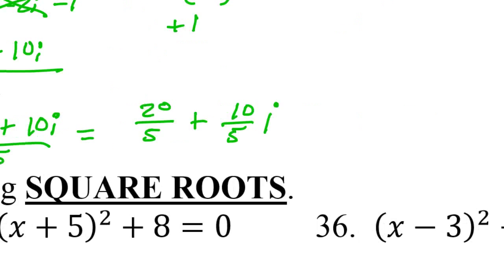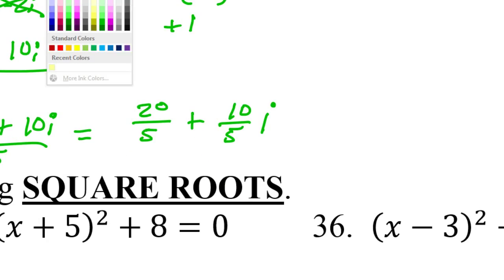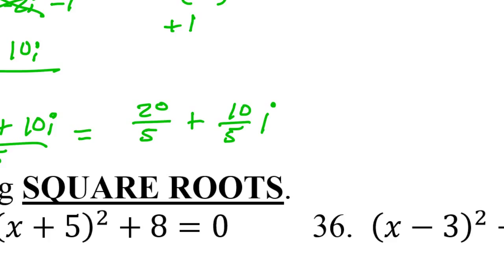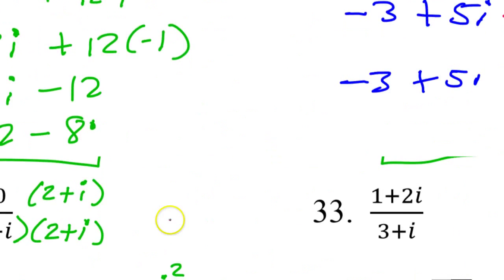And then you're supposed to separate this apart and make it 20 over 5 plus 10 over 5 i. Am I going to leave it like this? Is this my final answer? Why not? Yeah. What's 20 over 5? That's 4. So 4 plus 2i. And that's your final answer. Any questions about number 32?